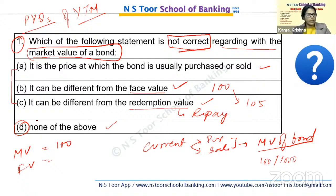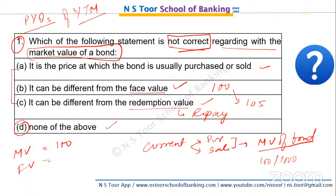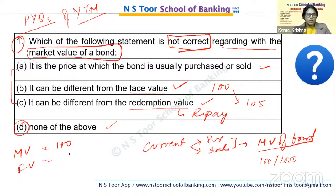So the question asks which statement is NOT correct — since all three statements A, B, C are correct, the answer is Option D: none of the above. This question is clear. Let's move to the next question — ye last class hai is chapter ki.